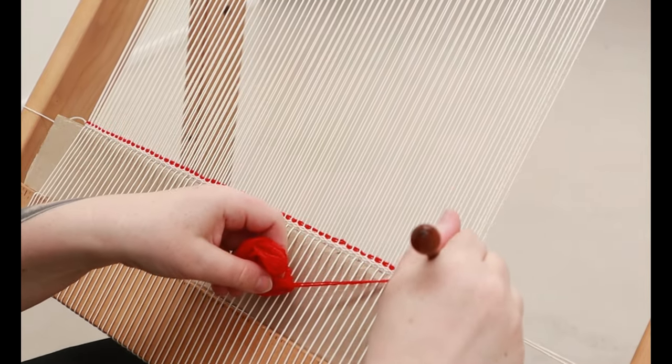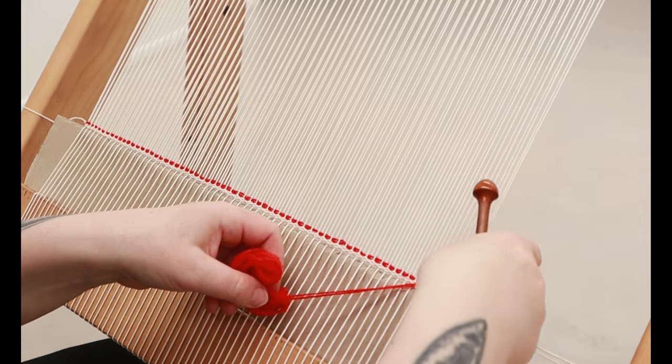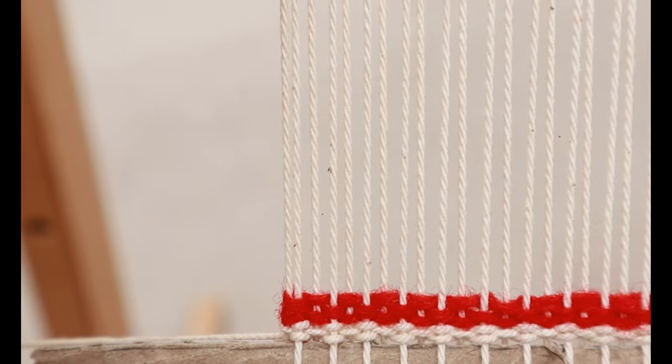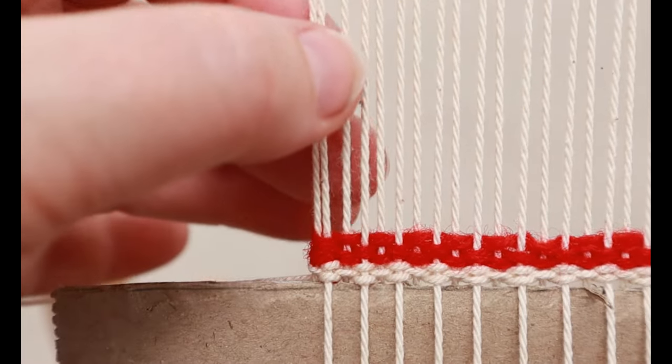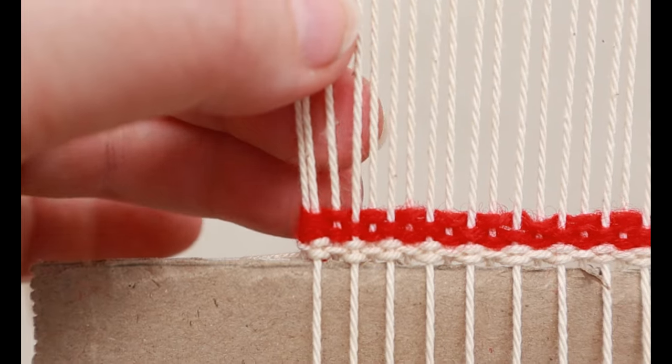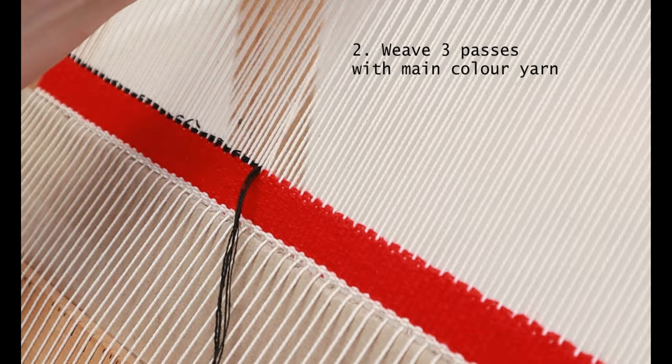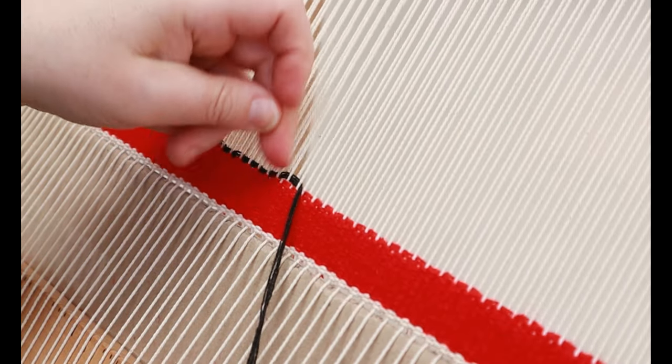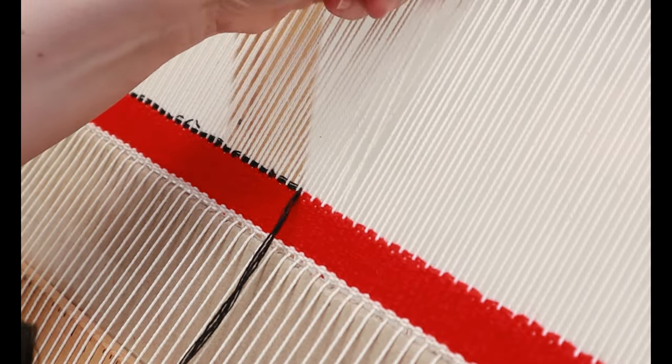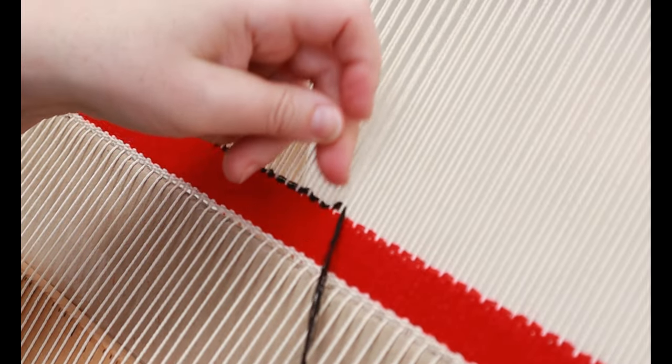You can see that I have a double warp on the edges. For me, that gives me a nice neat edge on the sides. It may not be for everyone, but it's just something I've found when doing tapestry weaving. Next we're going to weave three passes of the main color.